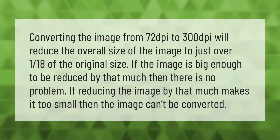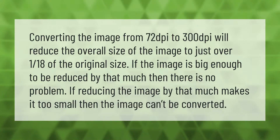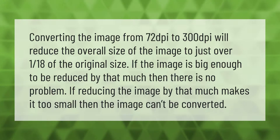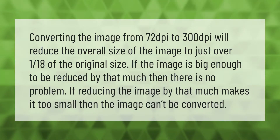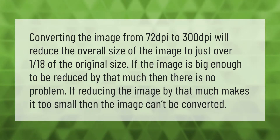Converting an image from 72 DPI to 300 DPI will reduce the overall size of the image to just over 1/18th of the original size. If the image is big enough to be reduced by that much, there is no problem. If reducing the image by that much makes it too small, then the image can't be converted.